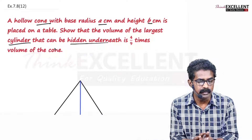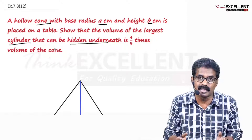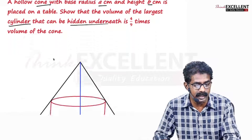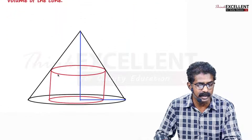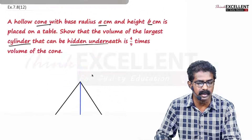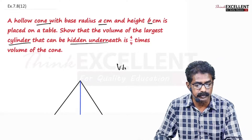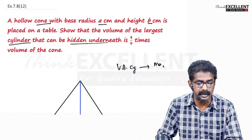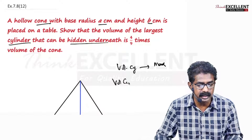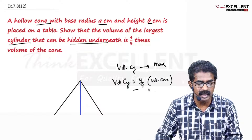We have to keep a cylinder inside — not a small one, the largest cylinder. So the volume of the cylinder must be maximum. The cylinder must be inside the cone. We have to prove that the volume of the largest cylinder is 4 by 9 times the volume of the cone. This is a very important question.